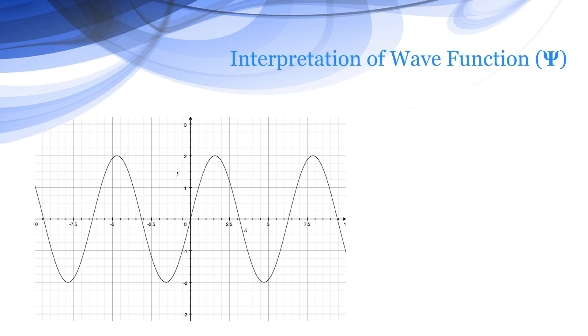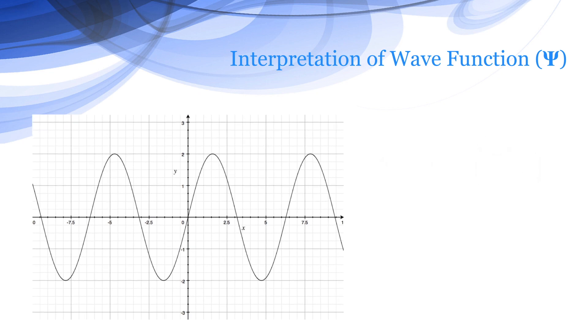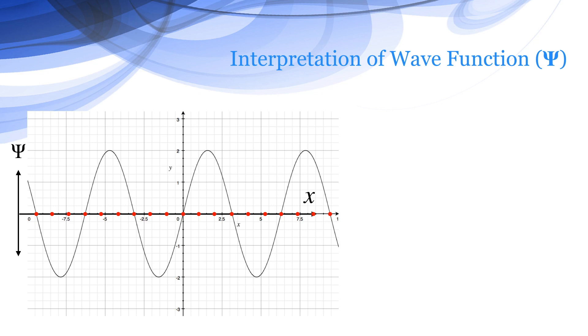For a three-dimensional wave, we need three coordinates, and therefore the movement of the particle is given by Ψ instead of y. So the equation becomes Ψ = a sin(2π/λ × x).